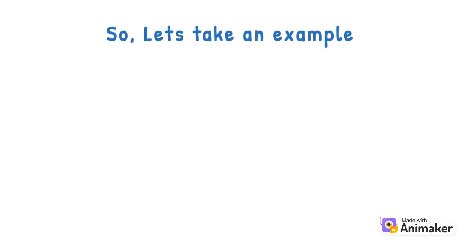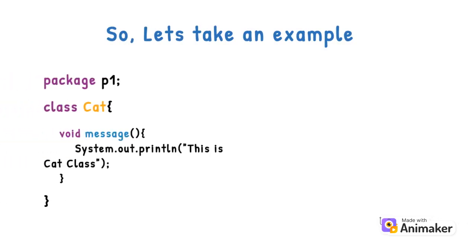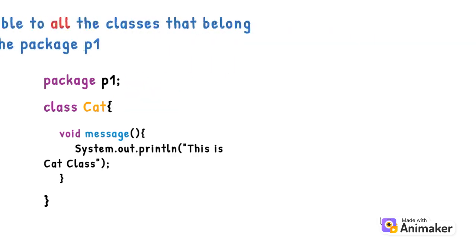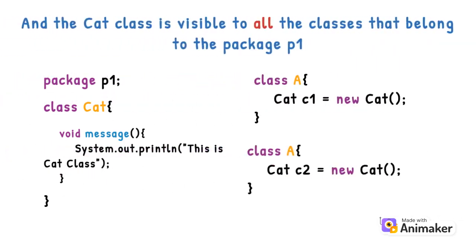Let's take an example of the cat class in package P1. Here, the cat class has the default access modifier, and the cat class is visible to all the classes that belong to the package P1.